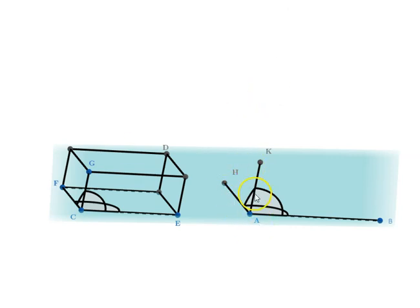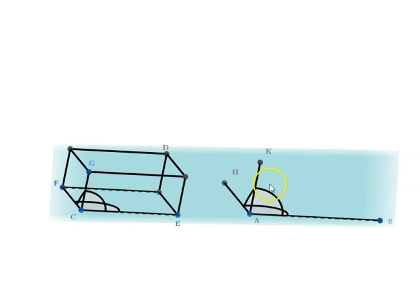Now that we have cut off the required segments AK and AH, we construct the various parallel and perpendicular lines. In other words, we complete the parallelogram PH and complete the solid. Let's do that.